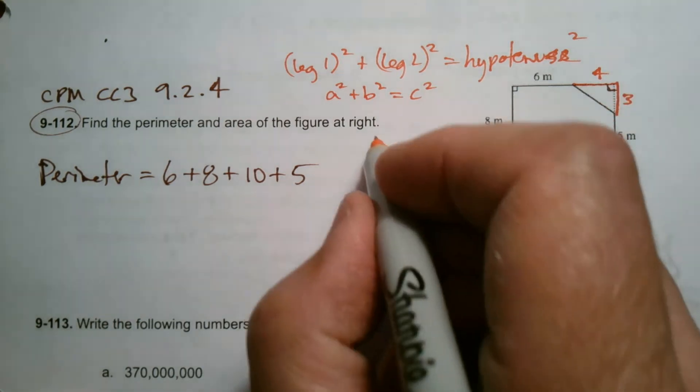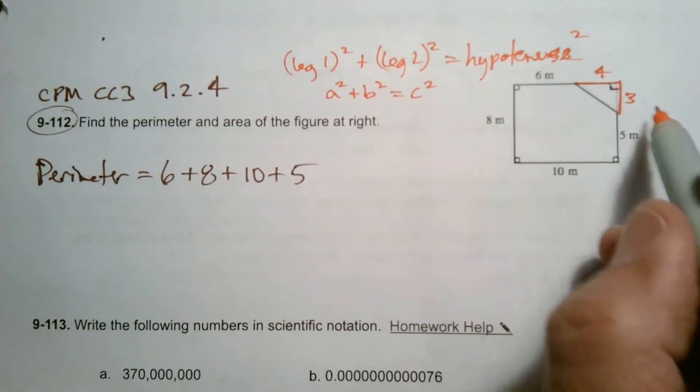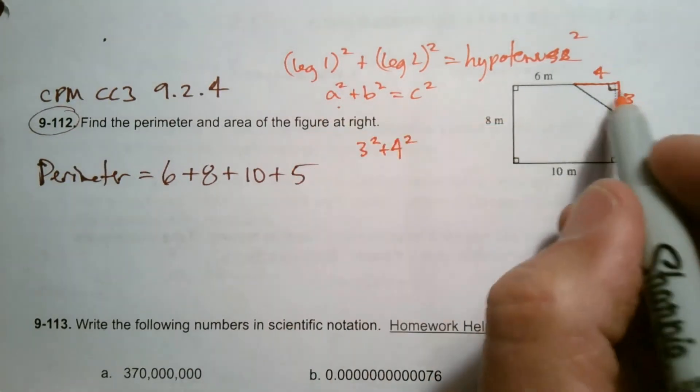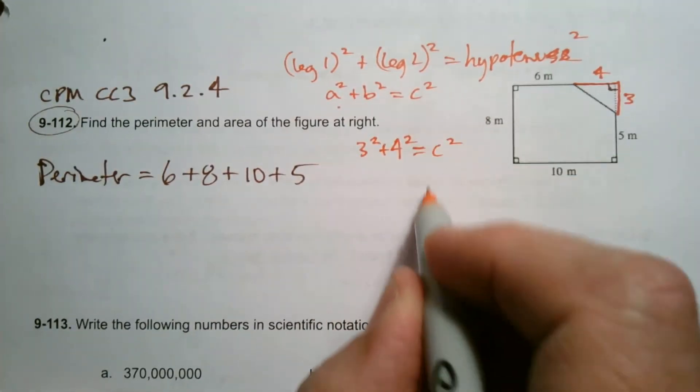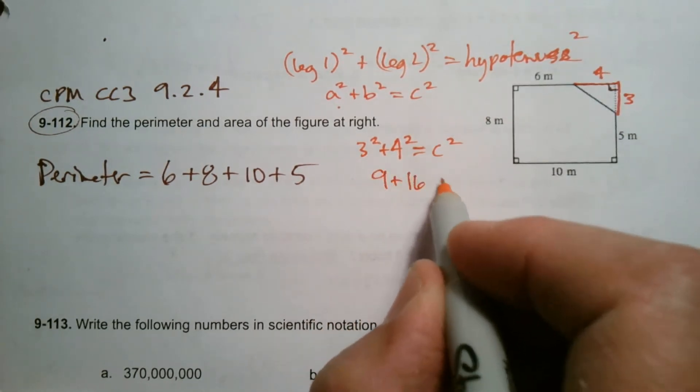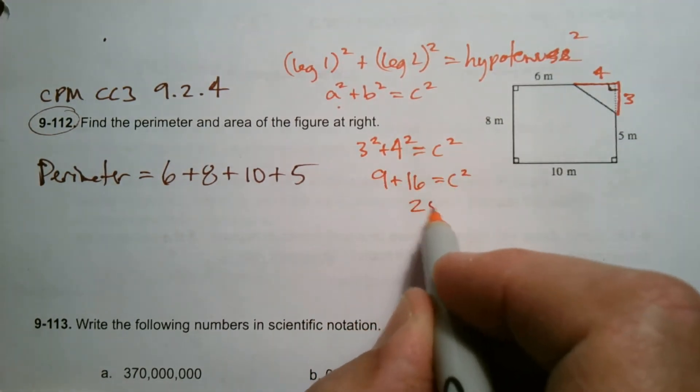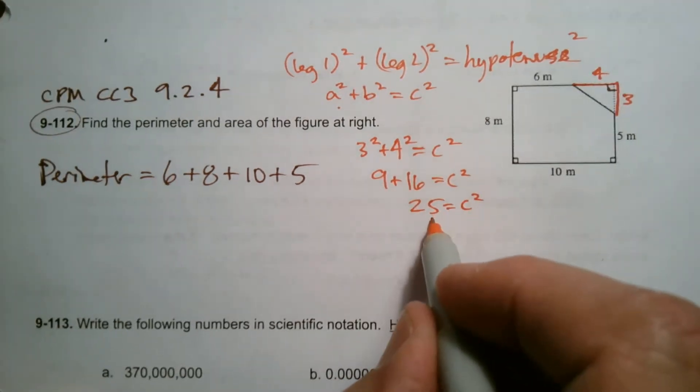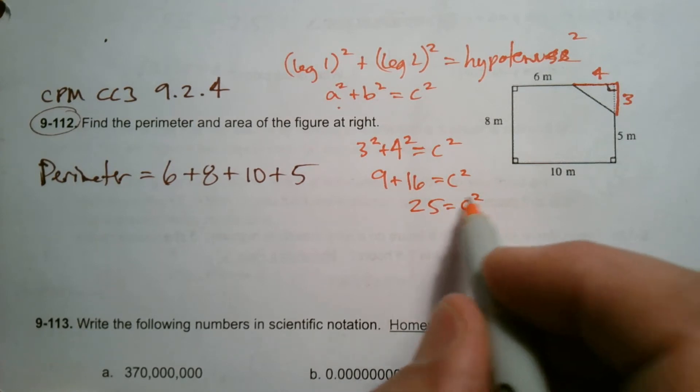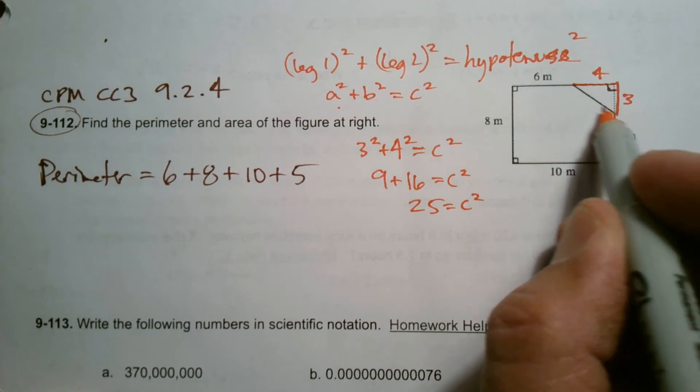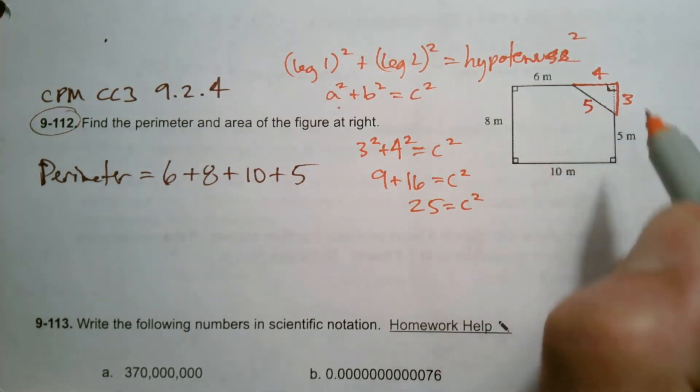So to figure out that piece, remember it's leg squared plus leg squared. So three squared plus four squared, a squared plus b squared equals my c squared. So let's keep working that. So that's nine plus 16 equals c squared. So c squared is equal to 25. So what is that c then? What times what is, right?